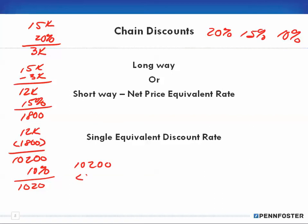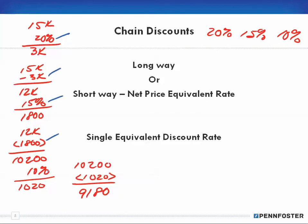After subtracting the final $1,020, you end up with a final amount of $9,180. That's the long way of doing it. You can see all the math: multiply, subtract, multiply, subtract, multiply, subtract. The problem is there are many steps along the way where you could be making a mistake.